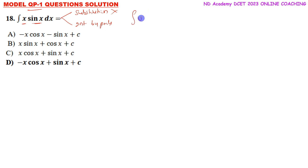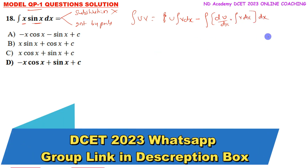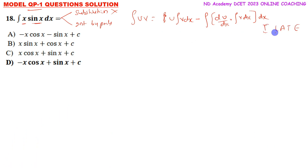Integration by parts formula: integration of u·v dx equals u times integration of v dx, minus integration of (differentiation of u divided by dx times integration of v dx) whole dx. To choose the first function, we use the ILATE rule: Inverse trigonometry, Logarithmic, Algebraic, Trigonometric, Exponential. So here x is algebraic (u) and sin x is trigonometric (v).